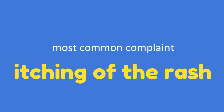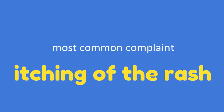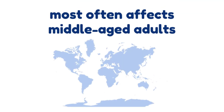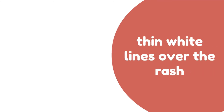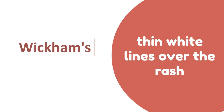The most common complaint of a person is the itching of the rash. Anyone can get lichen planus, but it most often affects middle-aged adults. The hallmark of lichen planus is thin white lines over the rash known as Wickham striae. Sores with burning sensations in the mouth is a type called oral lichen planus.